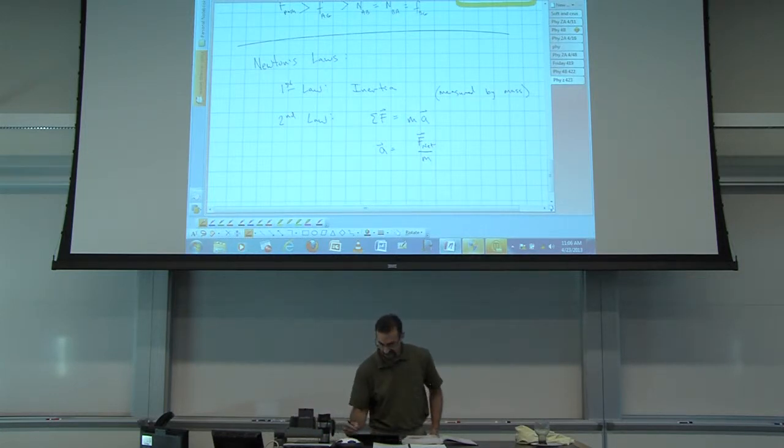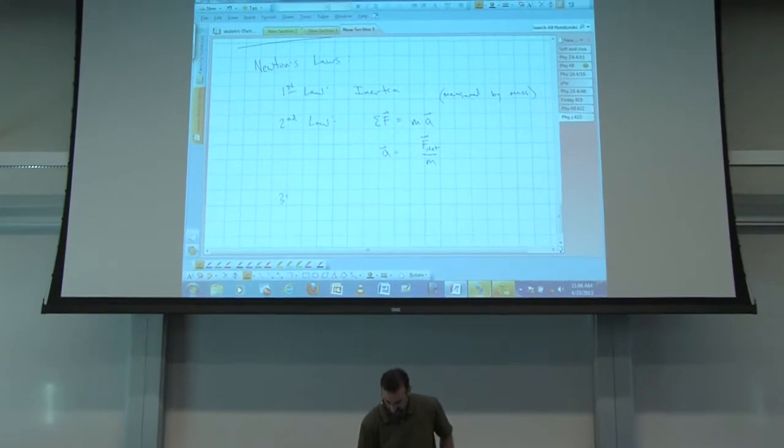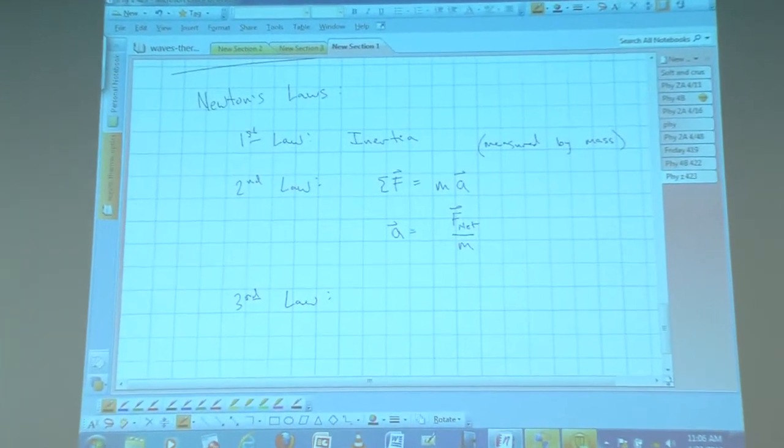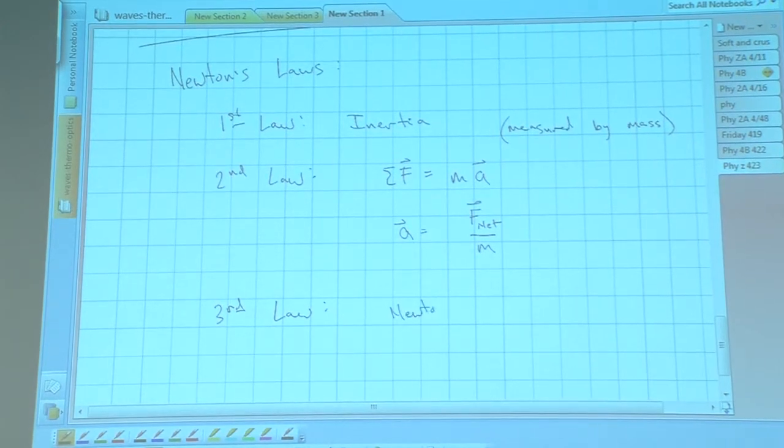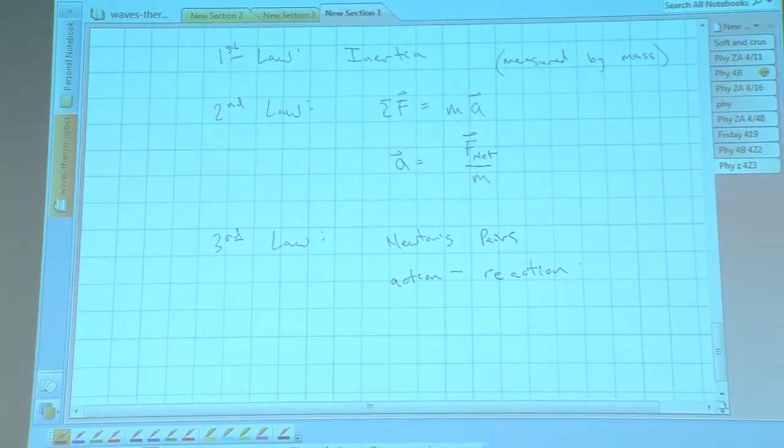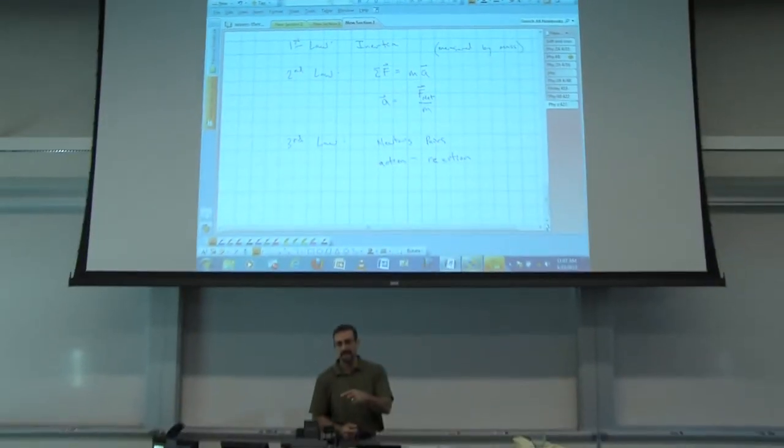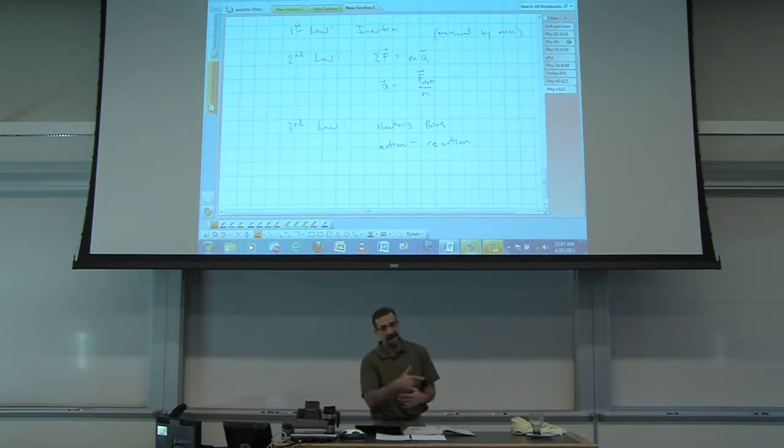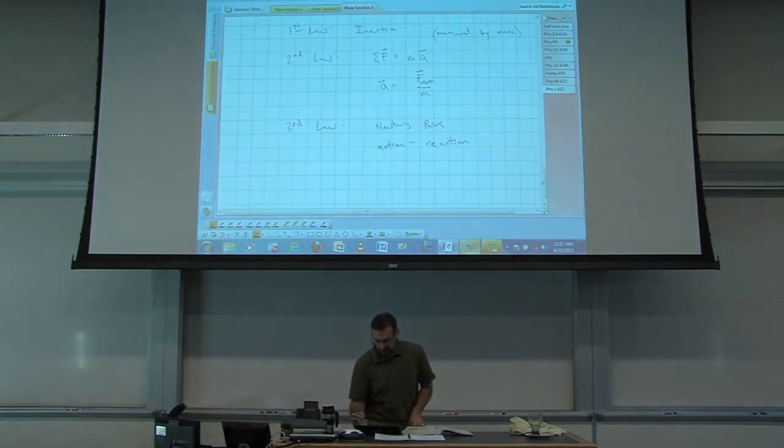And the third law. We've talked about that. That's these Newton's pairs. Some people call it action-reaction. But when two objects interact with each other, they always interact with equal and opposite forces. So object A pushes on object B. Object B pushes back on object A with an equal force in the opposite direction.